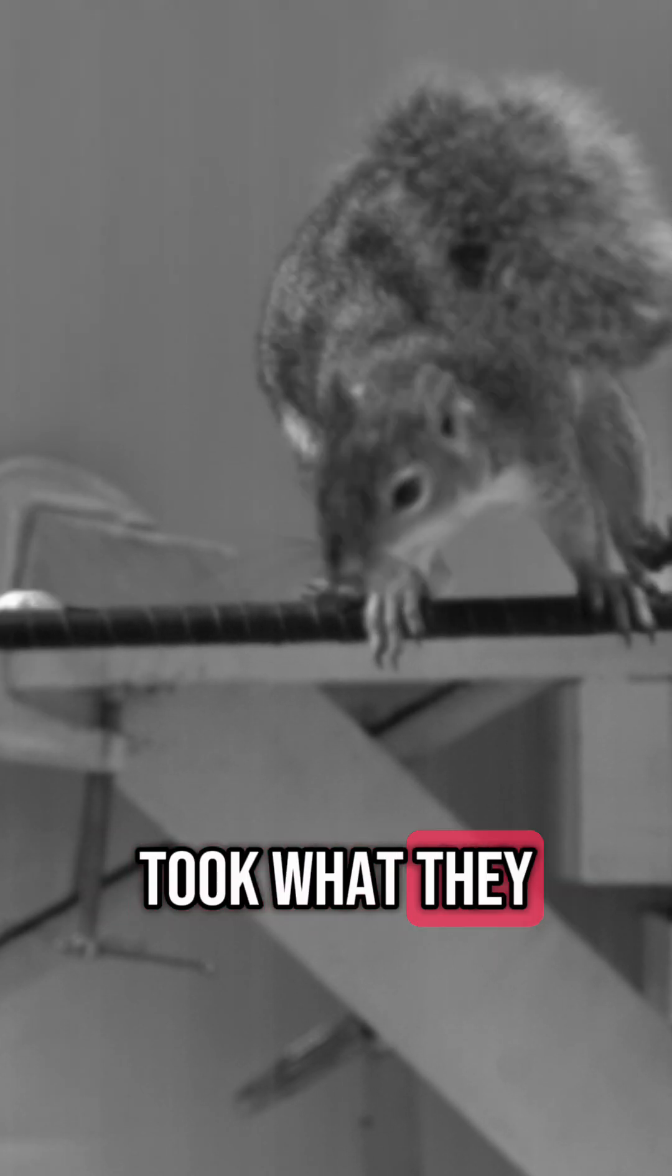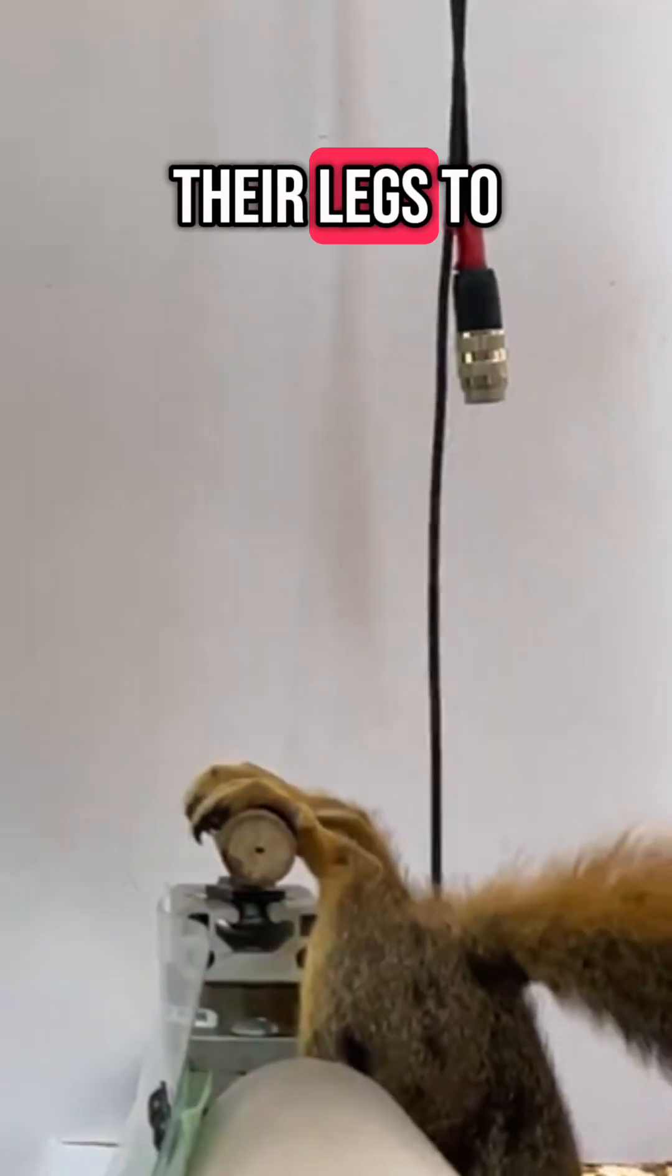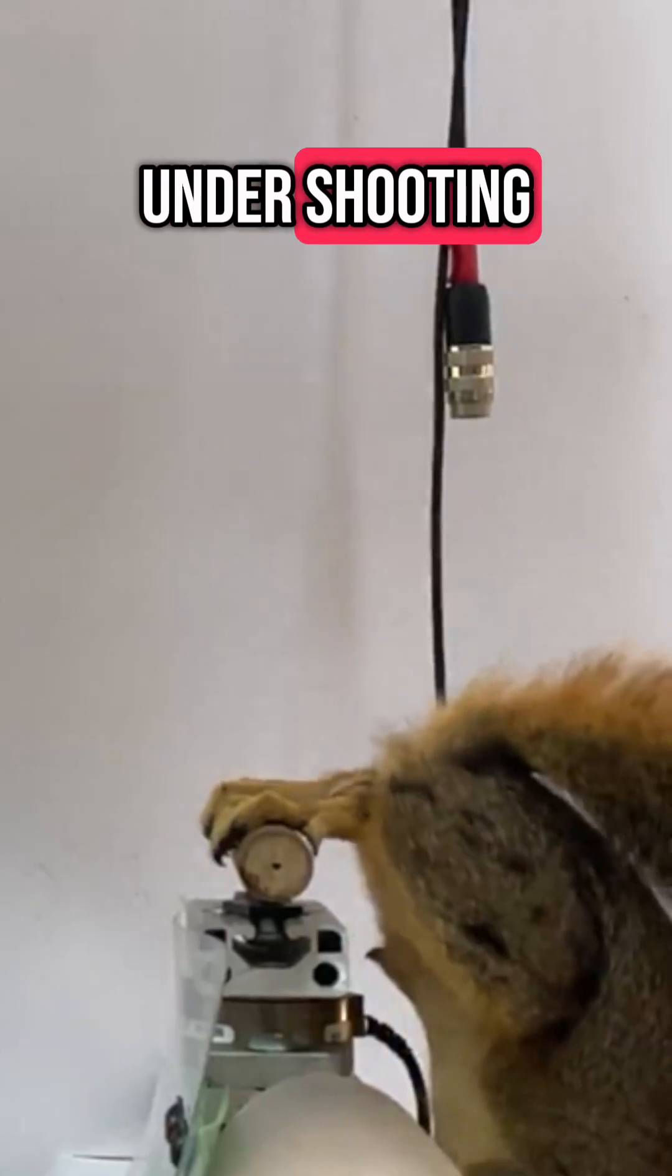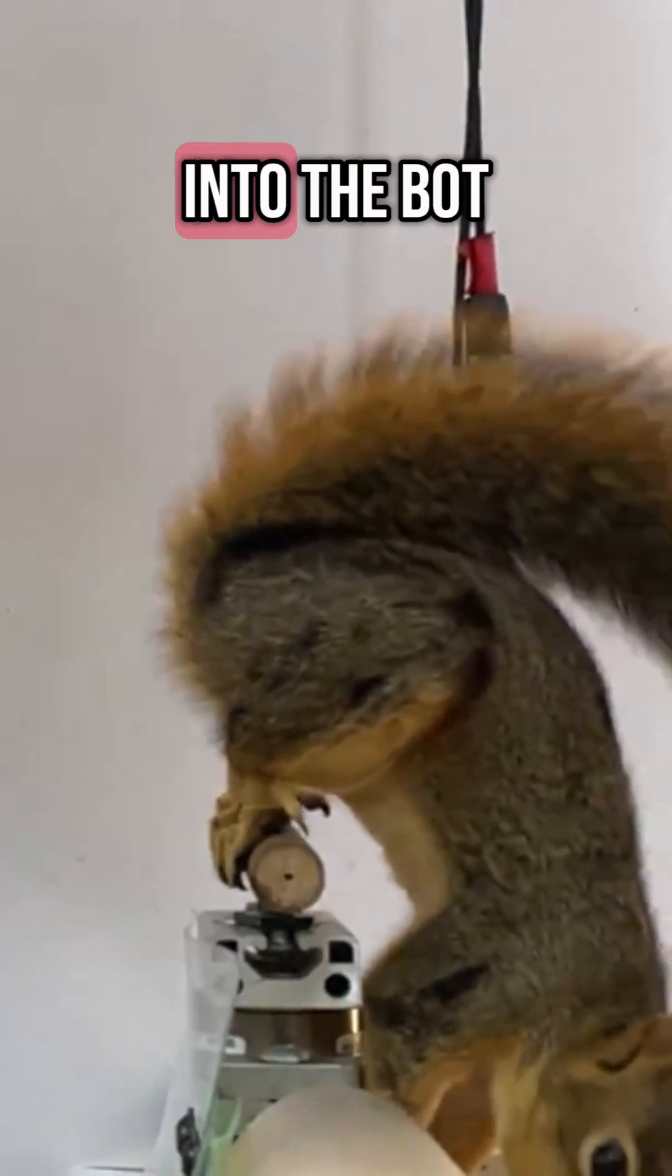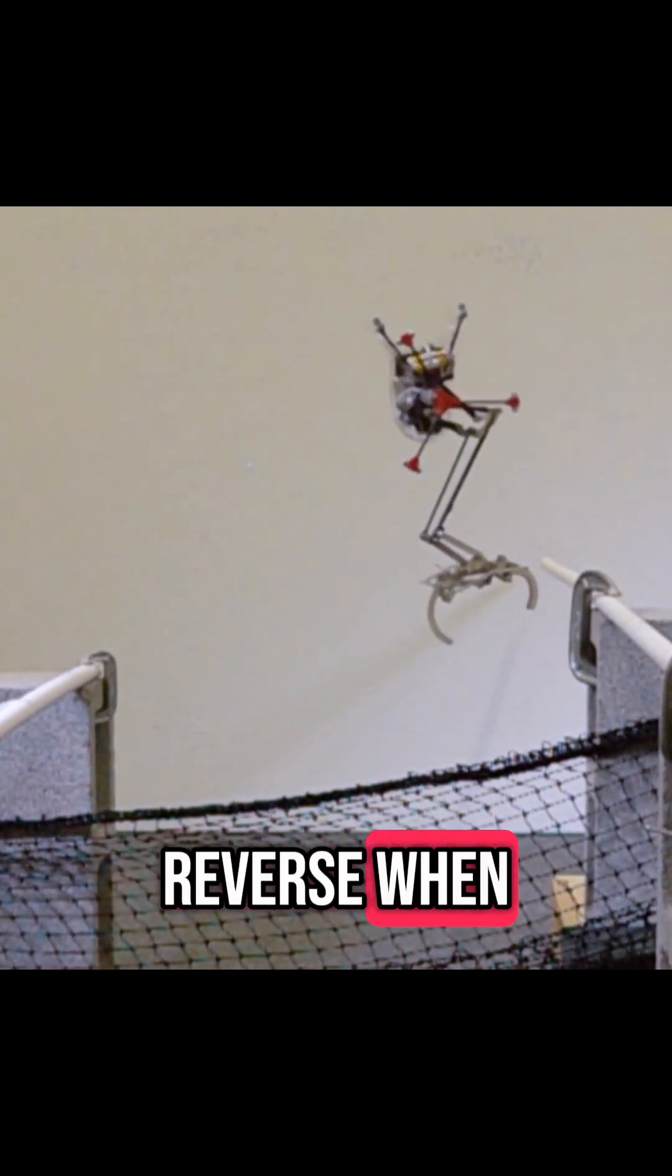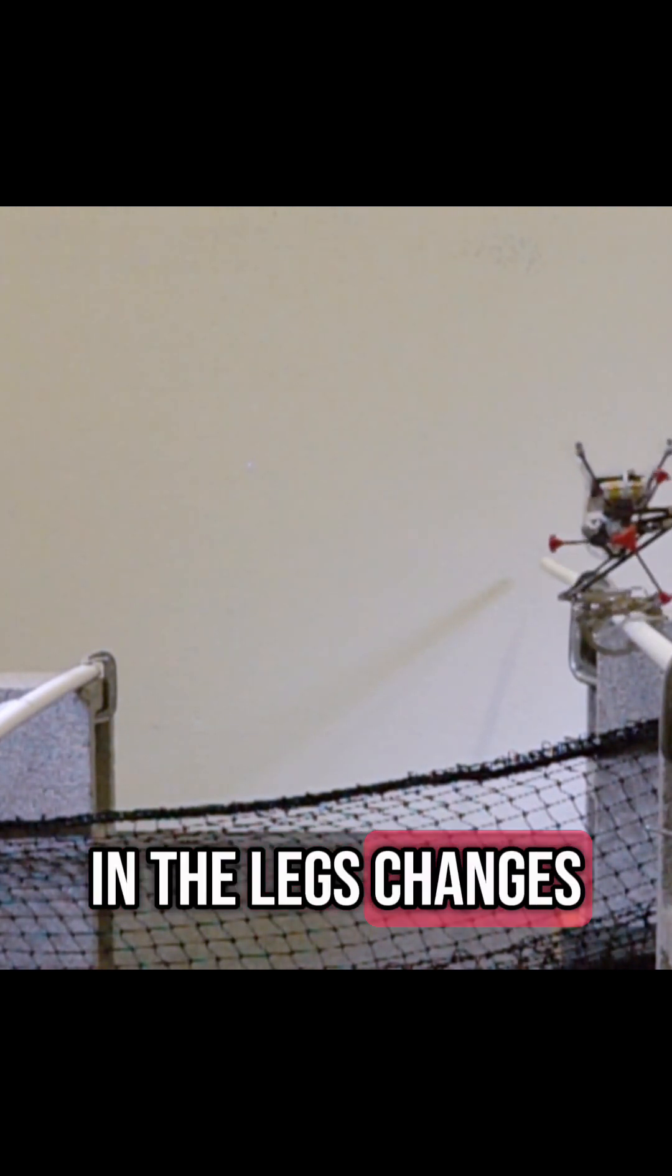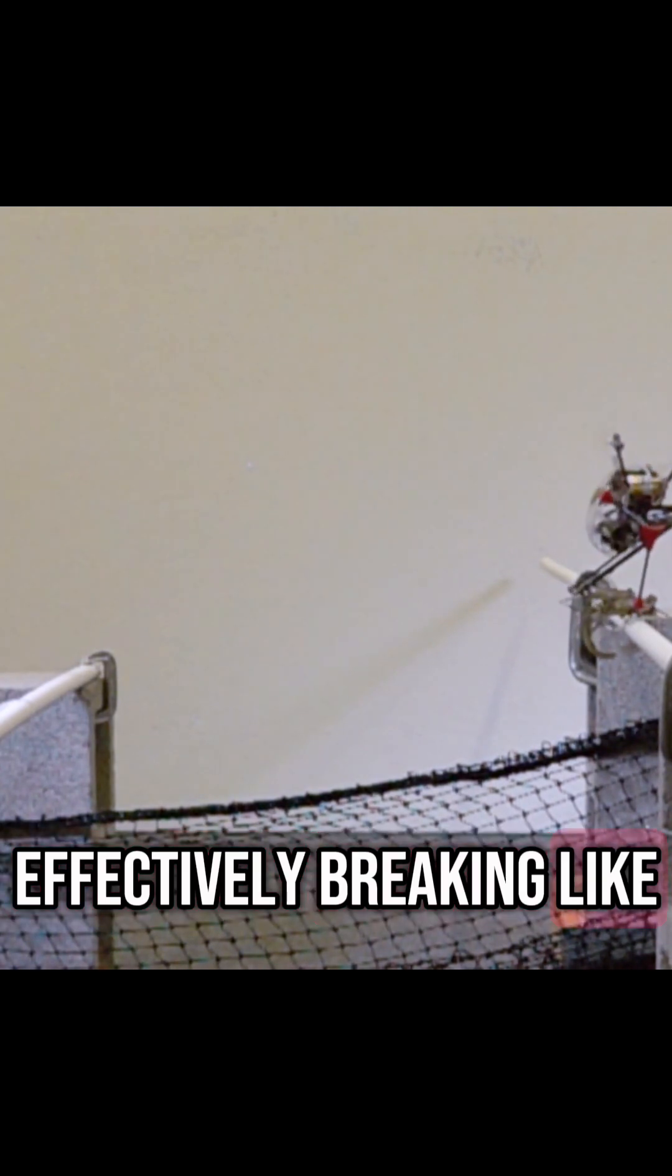So the researchers took what they found out from branch breaking by squirrels, which also used their legs to prevent over- or undershooting, and engineered it into the bot. Watch closely and you can see that the flywheel goes into reverse when Salto lands, and the tension in the legs changes, effectively breaking like the squirrel does.